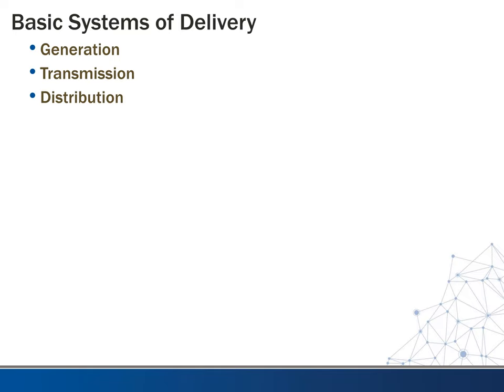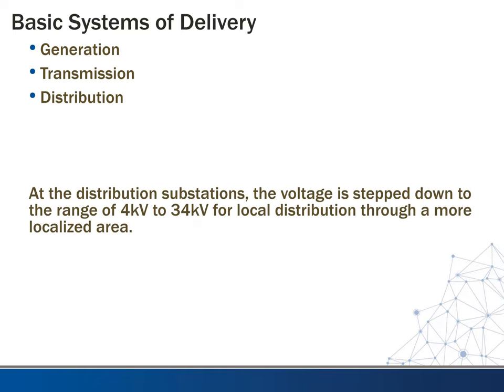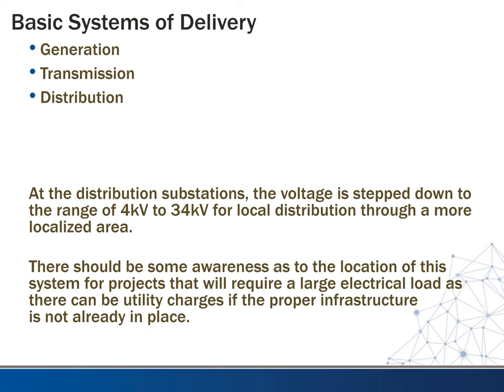Next on the list is distribution. At the distribution substations, the voltage is stepped down from the 69 to 765 kilovolt range — which is too high to run locally around town — down to around 4 kilovolts to typically 34 kilovolts for the localized area. There should be awareness of the location and extent of this system for our projects, especially if we require a large electrical load, because if the power infrastructure is not close enough to our site, the utility company may charge us to extend it. You may need to interface with the local power company in these cases.